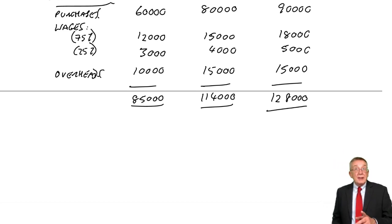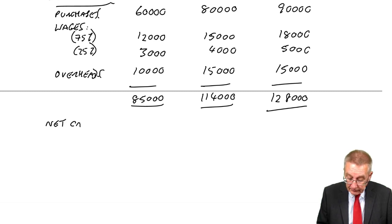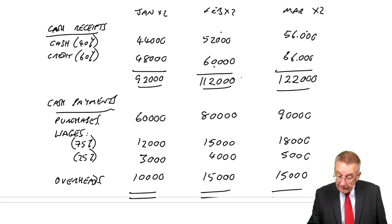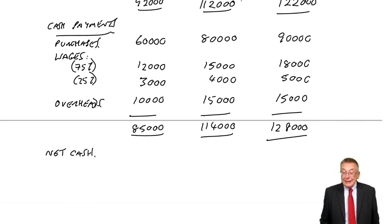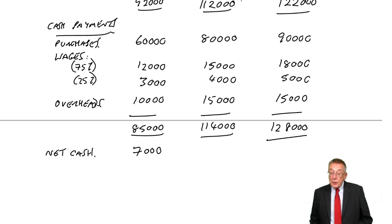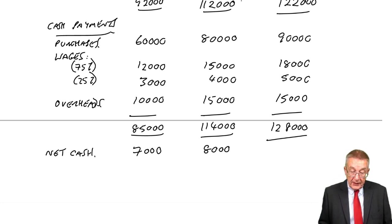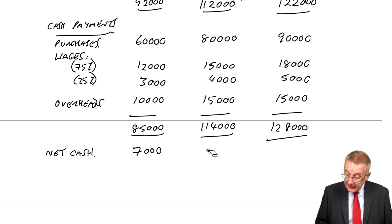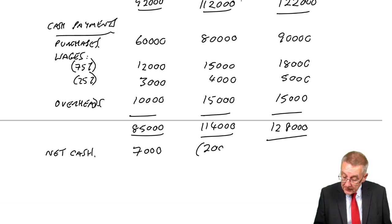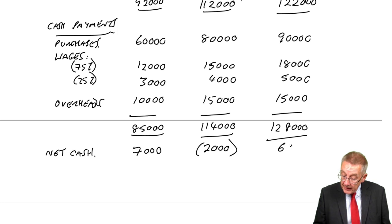Now I know each month what the cash receipts and cash payments will be, so what's the net cash flow? In January, we receive 92,000 and pay out 85,000, so there's a net inflow of 7,000. In February, we receive 112,000 and pay out 114,000, so a net payment of 2,000. In March, 122,000 in and 128,000 out — a net payment of 6,000.